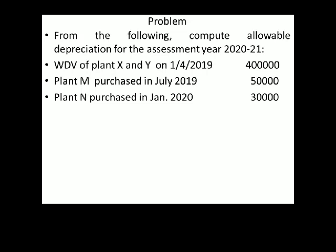Plant N was purchased in January 2020 for 30,000. Since it was purchased in January, February, March — that is less than 180 days — the half rate is applicable.